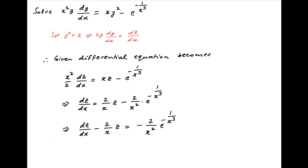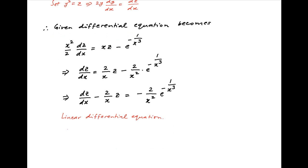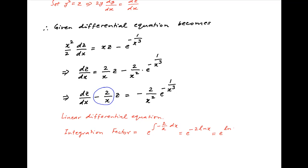Now this is the linear differential equation, and the integrating factor is equal to e raised to the power integral of the coefficient of z in the above differential equation, which is minus 2 upon x dx. This is equal to e raised to the power minus 2 ln x, which is equal to e raised to the power ln of x raised to the power minus 2, which is equal to 1 upon x square.